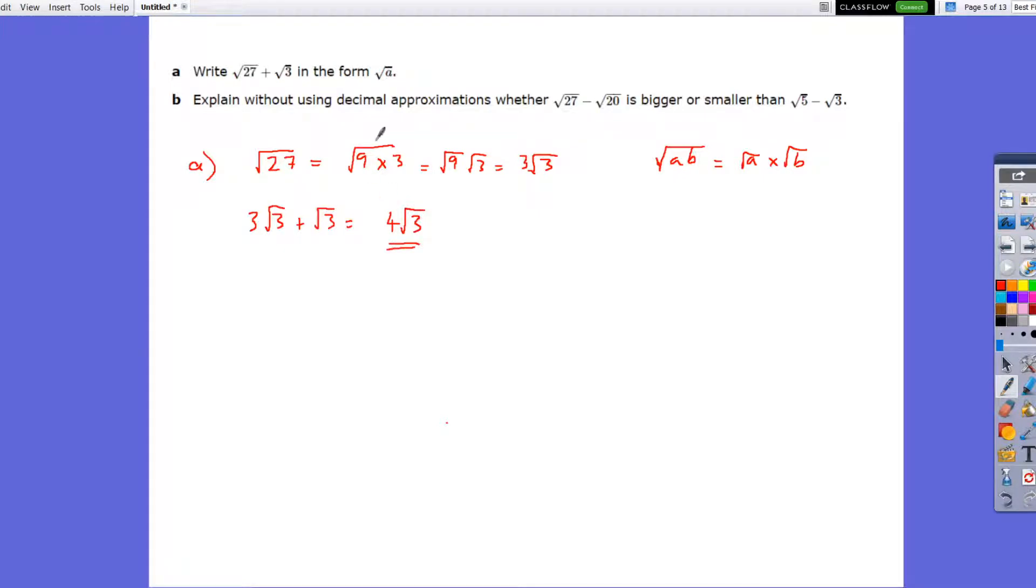Now that is the simplified version, however, it wants it in this form, where it's all as the root of an integer. So what I can now do is do the reverse, so 4 is the same as root 16, because the square root of 16 is 4, multiplied by root 3. And as before, we split it up, we can then do the reverse and put it all under one root symbol. So that will be just 16 times 3, which will equal root 48. Okay, so in this case, A equals 48.